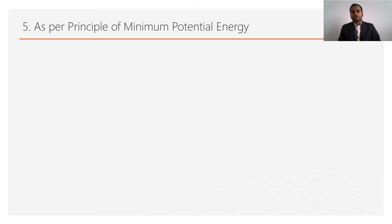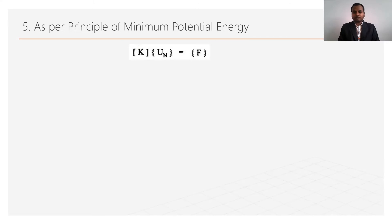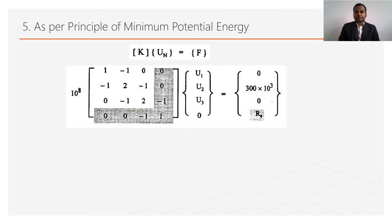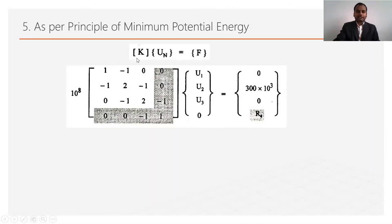The next step of FEM is to use the governing equation. As per the principle of minimum potential energy, stiffness × displacement = force. We write the global stiffness matrix multiplied by the displacement matrix equal to the force matrix. At the last row, instead of 0 we write R4, since a reaction forms at node 4; this equation will be used to find the reaction in the last step.